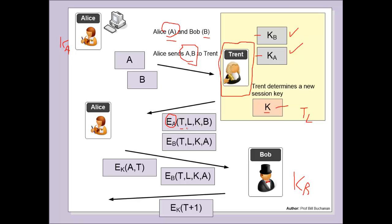Trent will take the timestamp, the lifetime, the new key that he's created and Bob's identity and then encrypt that whole lot with Alice's key. Along with this, he takes the timestamp, the lifetime, the new key and Alice's ID and then encrypts that with Bob's encryption key. Alice won't be able to decrypt this part of the message — this is known as a ticket — and the ticket will be passed to Bob.